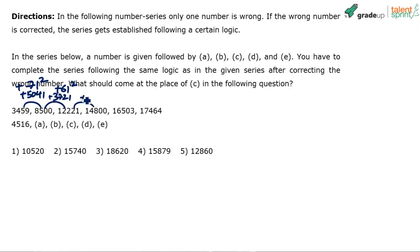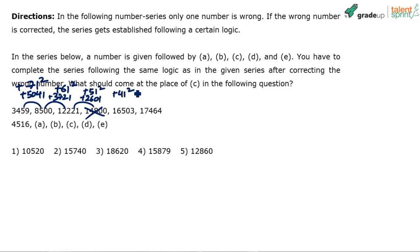So I should add 2,601, which means the number 14,800 is wrong, because 12,221 plus 2,601 will not give you 14,800. So this should be 51 squared, then 41 squared, and then 31 squared.